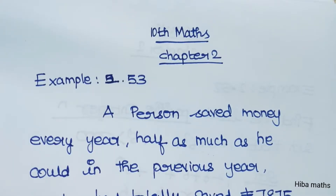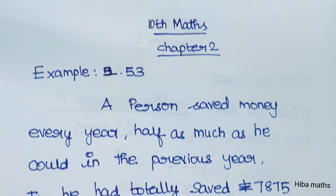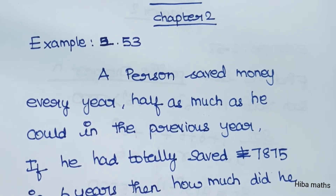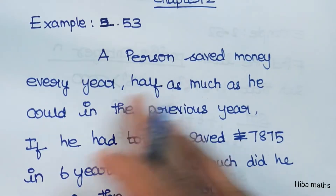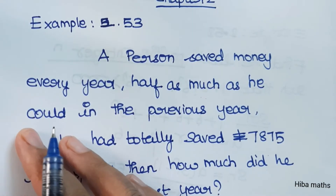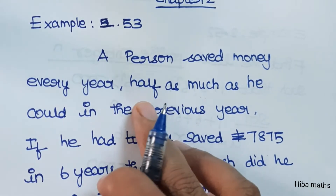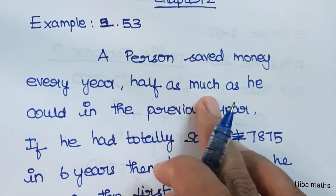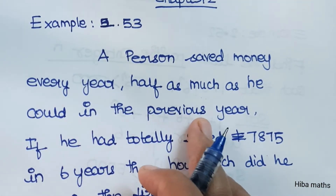Hello students, welcome to Hibamaks 10th Standard Math Chapter 2. Example 2.53: A person saved money every year, one year saving half as much as he saved in the previous year.